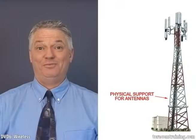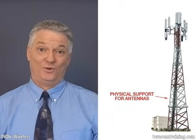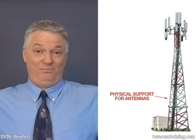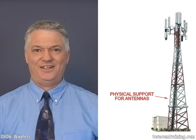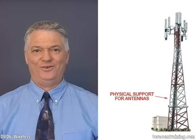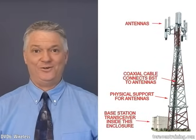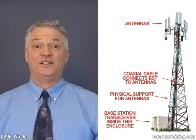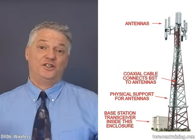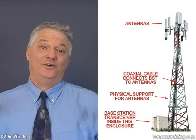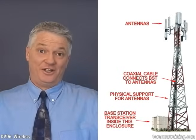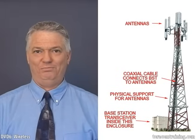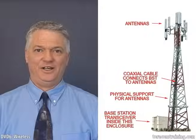The third component of the base station is the physical support for the antennas. In the first generation, cells were large and antennas had to be high up, so we had big ugly towers. In the second and subsequent generations, power was lowered and cells were made smaller, meaning the antennas could be closer to the ground — on top of a building, a water tower, or something like that.